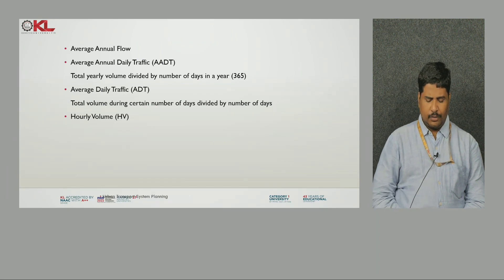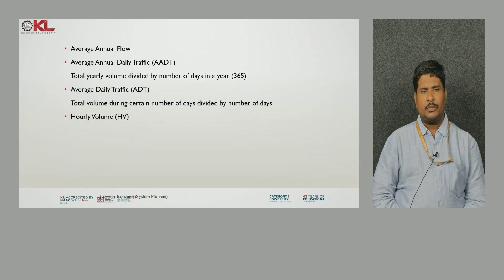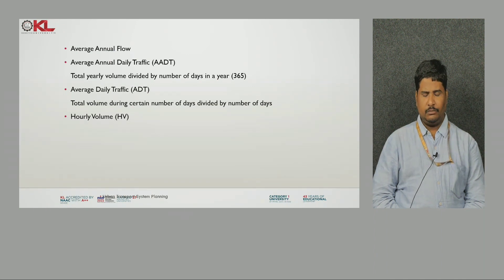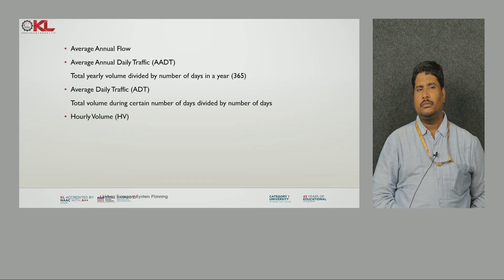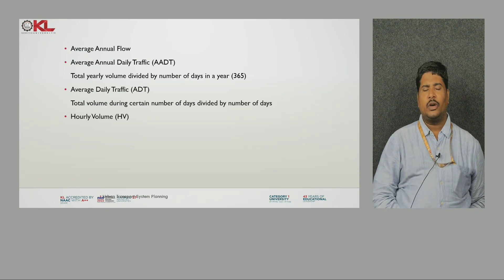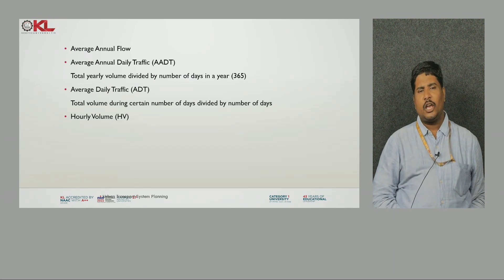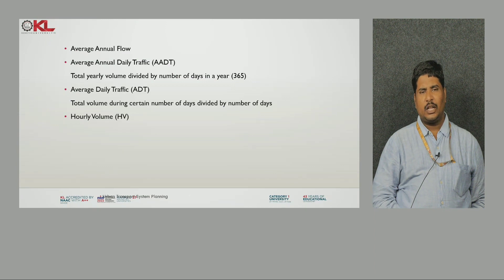Coming to the volume study, we will collect information in this manner. Average annual flow means on average per year how many vehicles are moving. Average annual daily traffic, that is AADT — by considering the annual traffic, on average each day out of 365 days how many vehicles are coming will be calculated. Using this, total volume divided by total number of days will give the average annual daily traffic.